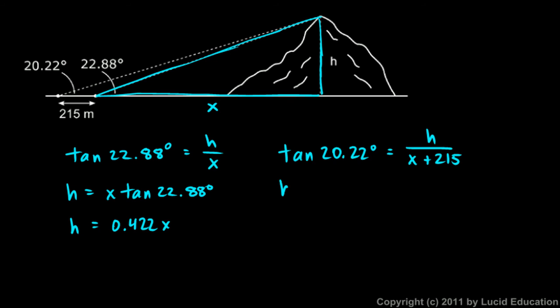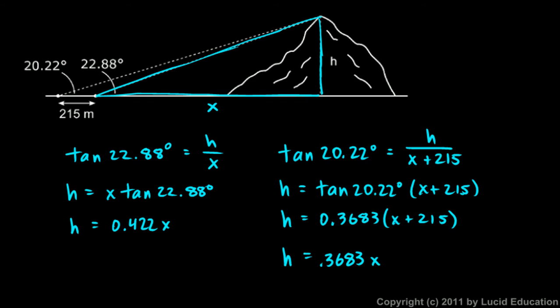Let's solve that for h: h is going to be the tangent of 20.22 times x plus 215. Tangent of 20.22 is just a number, that's 0.3683, so h is 0.3683 times x plus 215. I'm going to distribute the 0.3683, and when I do that I get h is 0.3683x plus 0.3683 times 215, and that's 79.19.